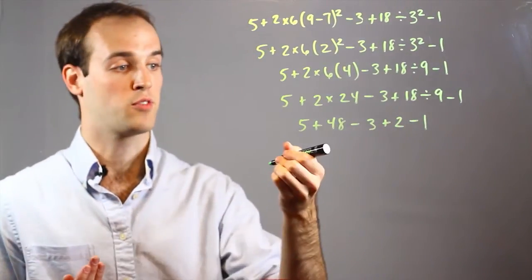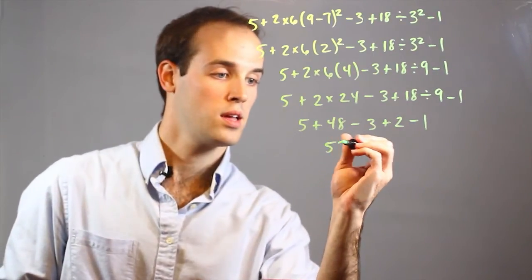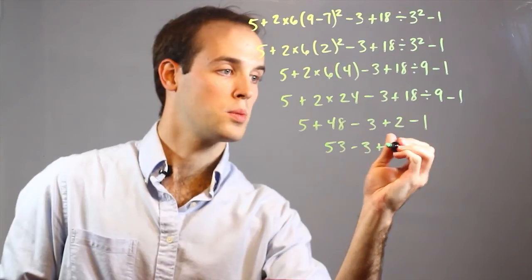So once I'm done with that, you can see I'm left with only addition and subtraction, which I can take care of right now. 5 plus 48 is 53, minus 3, plus 2, minus 1.